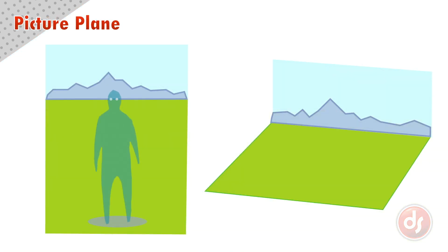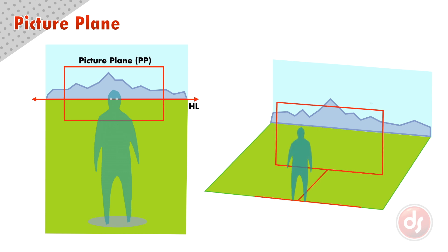The picture plane is the window that contains the image the viewer is seeing. It is essentially the borders of our page, and floats in front of the viewer, fixed at a right angle.